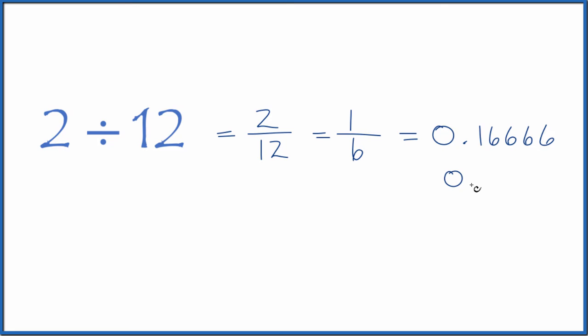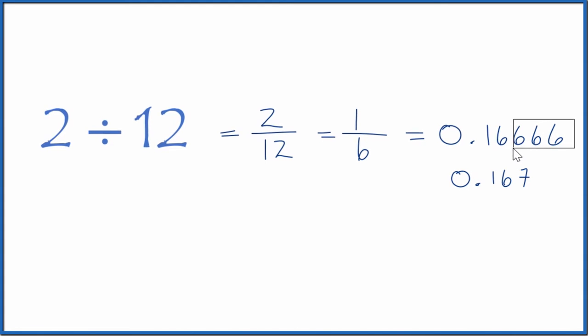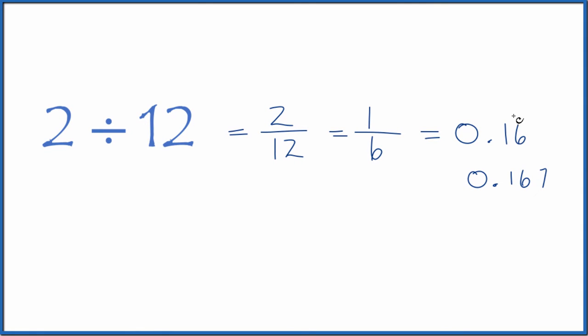So you could round this. You could call this 0.167, and that would be very close to what you would have for 2 divided by 12. Or you could put a bar over the six, and that would mean 0.16 with the sixes repeating.